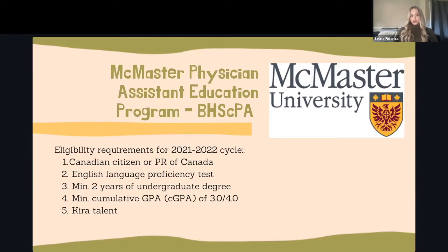The minimum cumulative GPA has to be a 3.0 on the 4.0 scale, and that includes all university courses taken. If you've only completed two years, that would be all the courses you've taken. It does not consider master's level courses — just undergraduate. The last part would be the Kira Talent interview, which you would do if your GPA requirement was met.